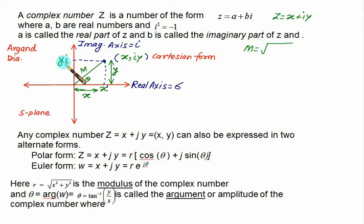Since distance is a positive quantity, m is also always a positive quantity. So we have m equal to square root of x squared plus y squared, which is basically equal to real part squared plus imaginary part squared.